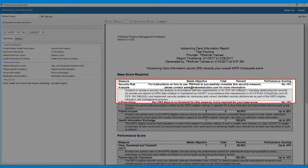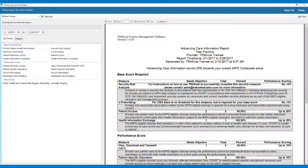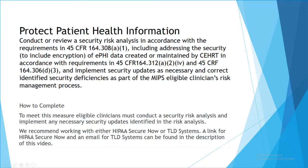The first measure in the report is a Security Risk Analysis. To complete this measure, the clinician must conduct or review a Security Risk Analysis in accordance with the requirements, including addressing the security to include encryption of electronic patient health information data created or maintained by a certified electronic health record technology, and implement security updates as necessary and correct identified security deficiencies as part of the MIPS-eligible clinicians' risk management process.